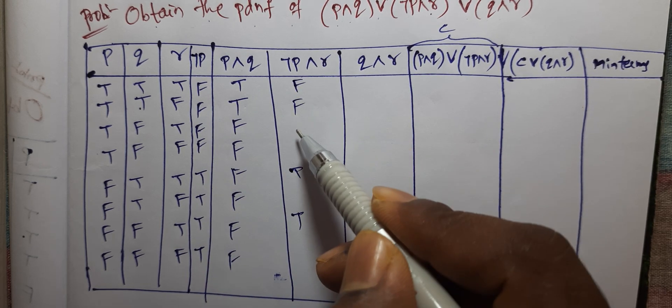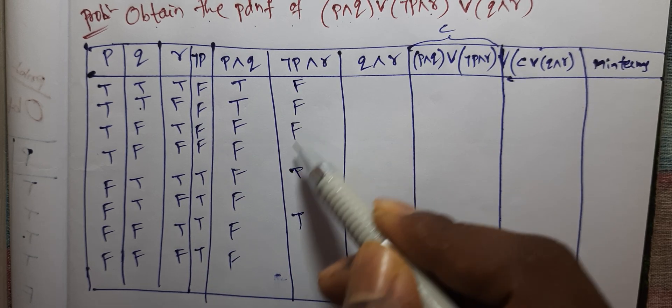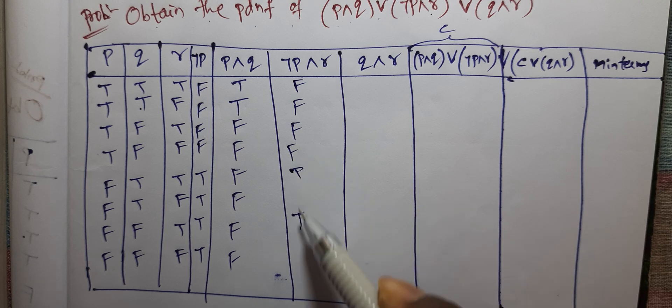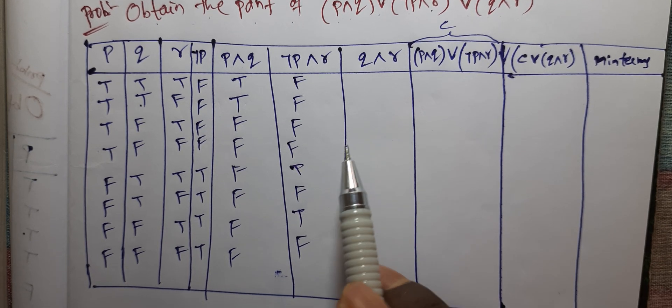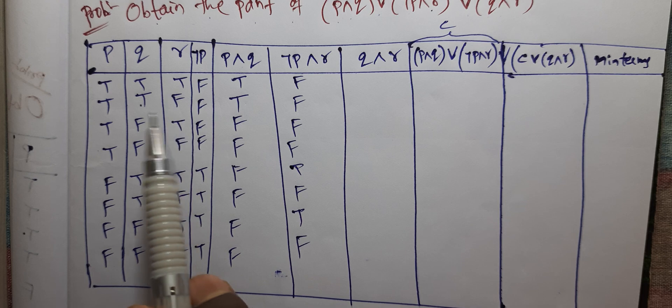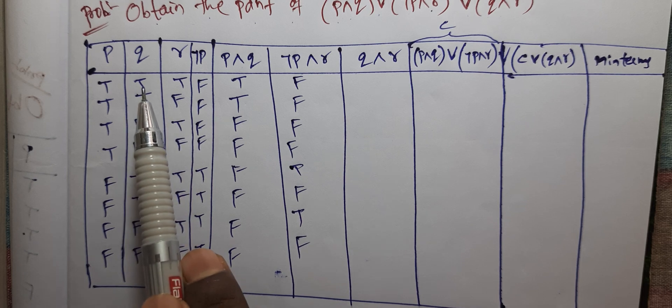False, false, false, false, false, false, false, false. Now Q and R.